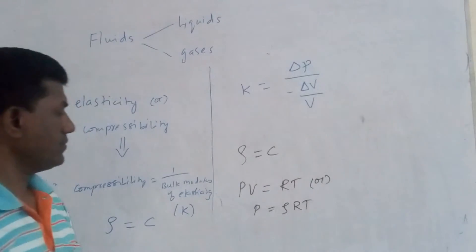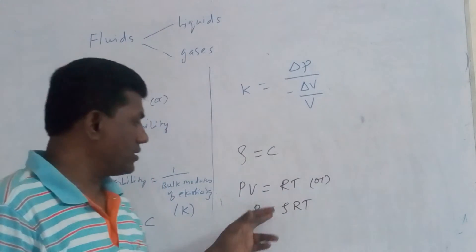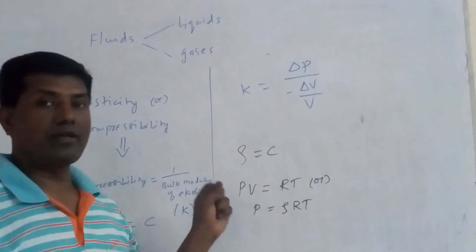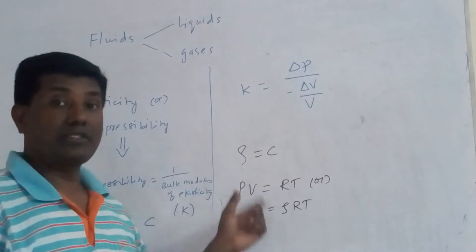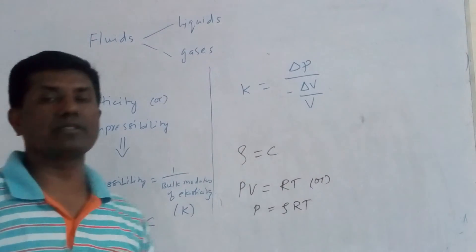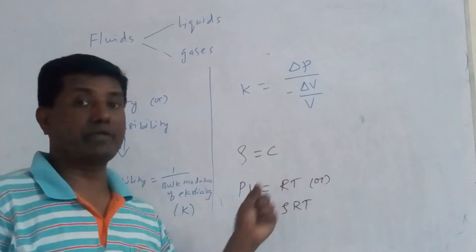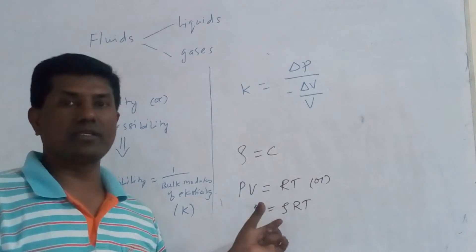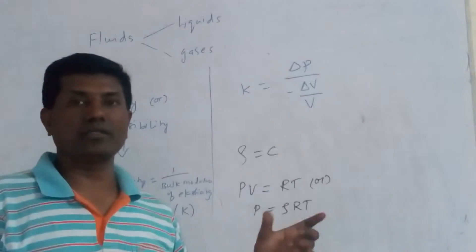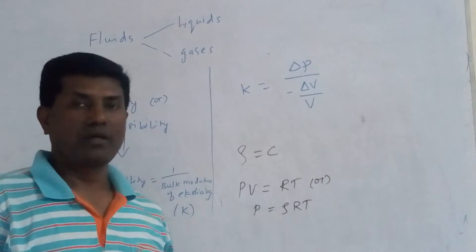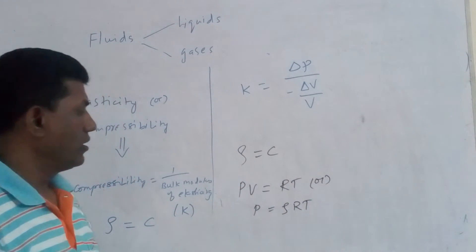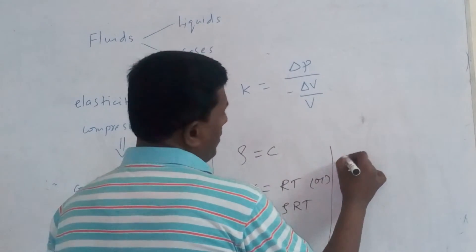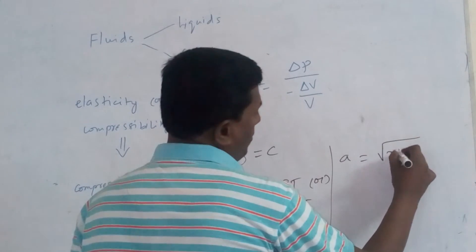In the case of gases the variation of density is significant only when the velocity of gases is comparable with the speed of sound. So speed of sound is nothing but velocity of propagation with small disturbances or small perturbations. That velocity of sound is generally written as a equal to square root of gamma RT.